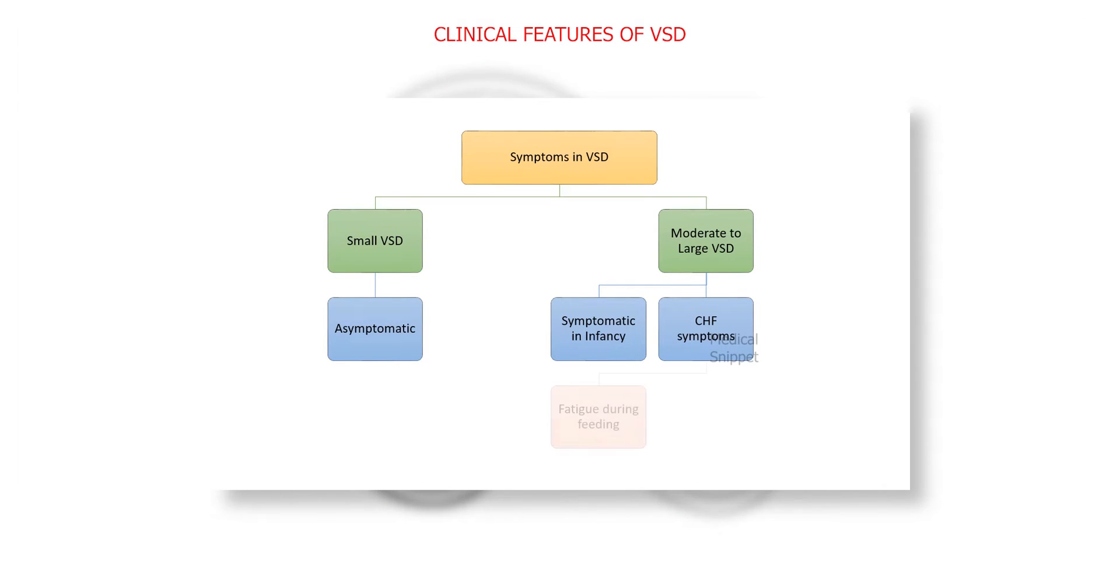Congestive heart failure symptoms are fatigue during breastfeeding, sweating of forehead, and failure to thrive. They can also develop recurrent respiratory tract infection due to increased pulmonary blood flow. In moderate VSD, the symptoms are similar to that of large VSD but with less severity.